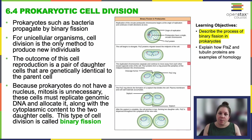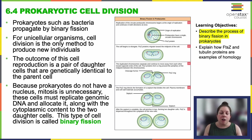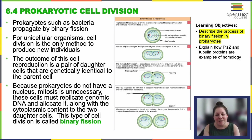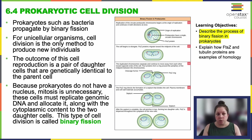Bacteria and other prokaryotes reproduce through binary fission, which is the primary method for generating new individuals in unicellular organisms. In both prokaryotes and eukaryotes, cell division results in two identical daughter cells — they're genetically identical. In unicellular organisms, these daughter cells are considered individuals. This is their form of reproduction.